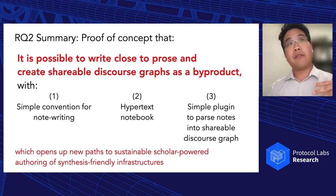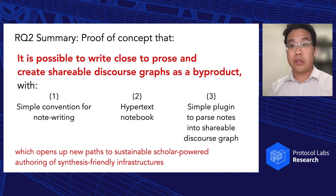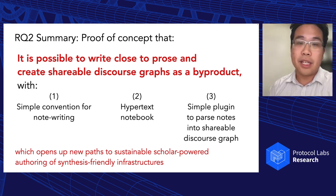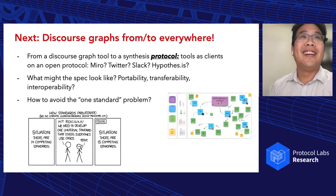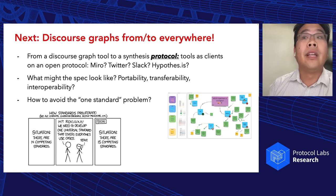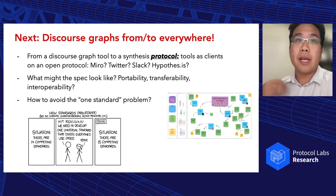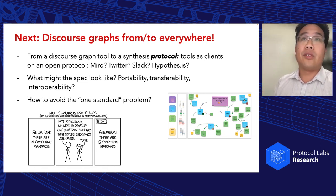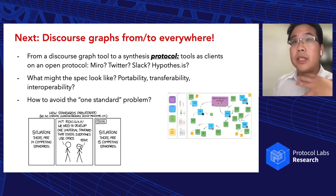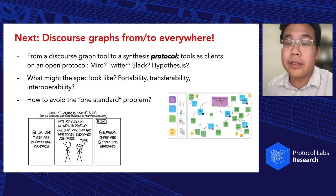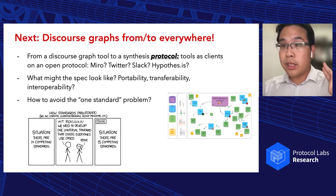To summarize question two: I think we have a proof of concept. It's possible to write close to prose and create shareable discourse graphs as a byproduct. I think this opens up new paths to sustainable scholarly authoring. Where we want to go next is 'discourse graphs from and to everywhere.' I'm excited about this being a synthesis protocol — tools as clients on an open protocol, integrating discourse graph extensions in Miro, Twitter, Slack, Hypothes.is, and so on. Key concern is enabling portability, transferability, and interoperability to avoid the 'one standard problem.' The idea of translating between user-extendable grammars while having a similar underlying model seems like one promising way to enable peer-to-peer federation.